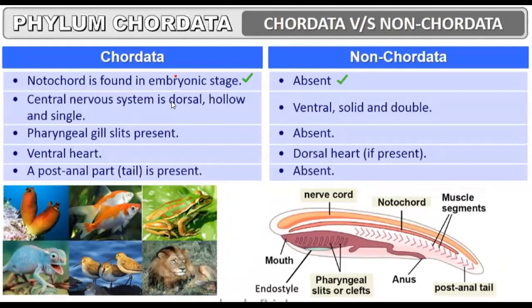The central nervous system is dorsal. In non-chordates, the nerve cord is always solid, double, and ventral. In chordates, the nerve cord is hollow from inside — meaning it has a cavity — and it is single.